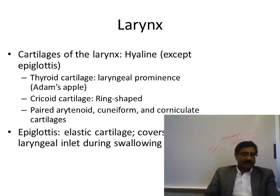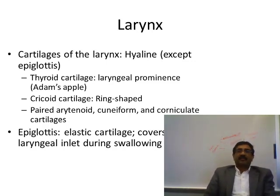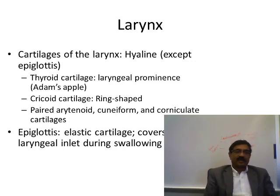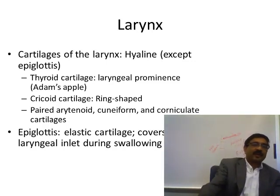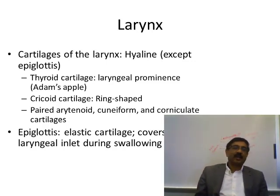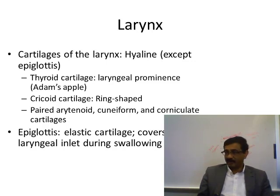The larynx, also called the sound box, is a structure mainly formed by hyaline cartilages and connective tissue ligaments. It has unpaired and paired cartilages. The unpaired cartilages include the thyroid cartilage and the cricoid cartilage — the two largest. The thyroid cartilage is the largest and is also called Adam's apple, forming the laryngeal prominence, which is more prominent in males. At puberty in boys, the thyroid cartilage gets bigger.